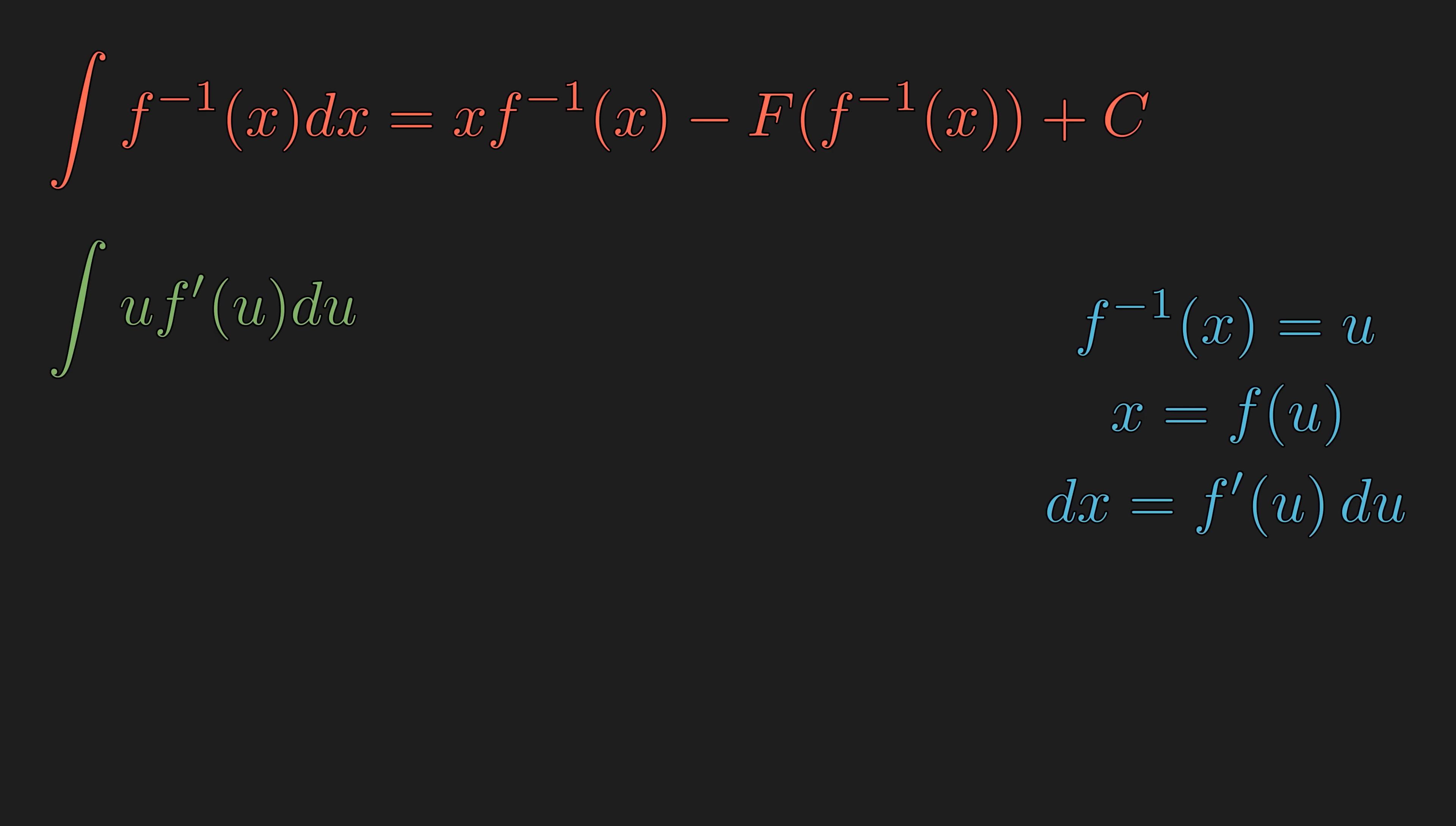Now, we want to integrate this by parts. So, we can let u be u and dv be f' of u du. So, v is equal to f of u. So, the integral is u v minus the integral of v du.